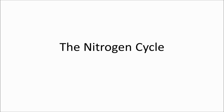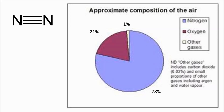Welcome to this video on the nitrogen cycle. An important thing to appreciate is that about 78% of our atmosphere is nitrogen. It exists as two nitrogen atoms stuck together by a strong triple covalent bond, so it's pretty unreactive — strongly bonded together.